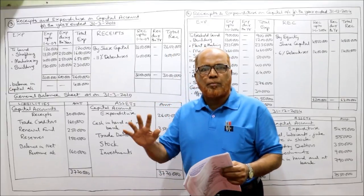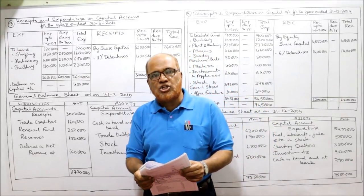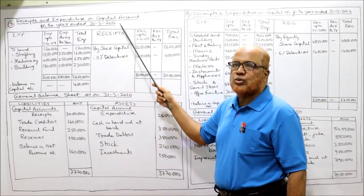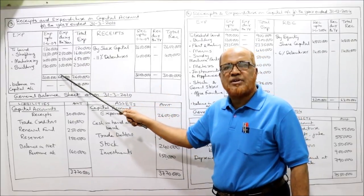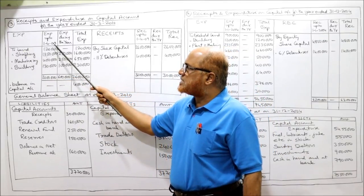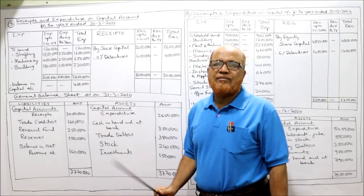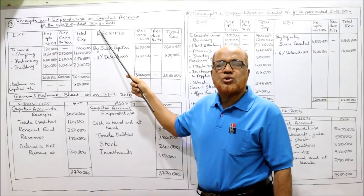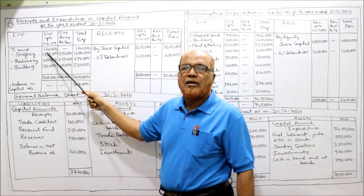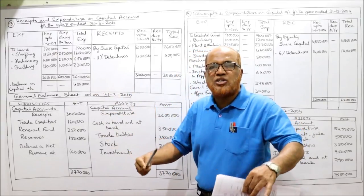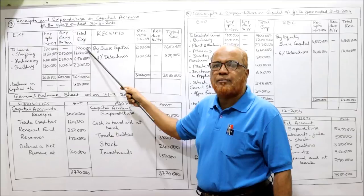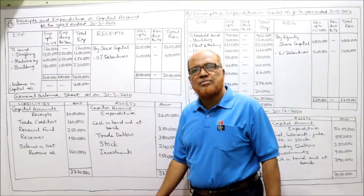The second part of the balance sheet is called the general balance sheet. In receipts and expenditure on capital account, we take only the fixed capital as receipts and capital expenditure as expenditure. The debit side takes expenditure and the credit side takes receipts. Authorized capital is only information — it will not be recorded in the capital account. The format has three columns on the debit side and three columns on the credit side: expenditure up to 1st April 2009, expenditure during the year, and total expenditure.